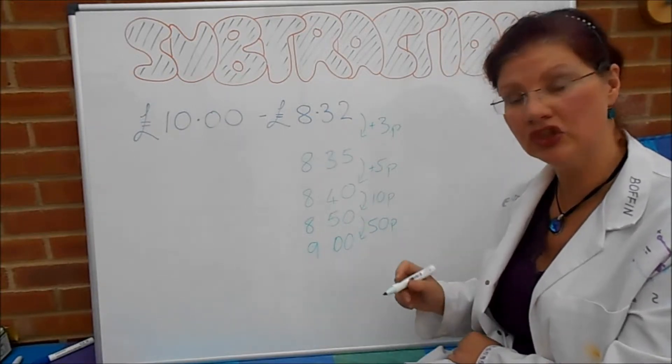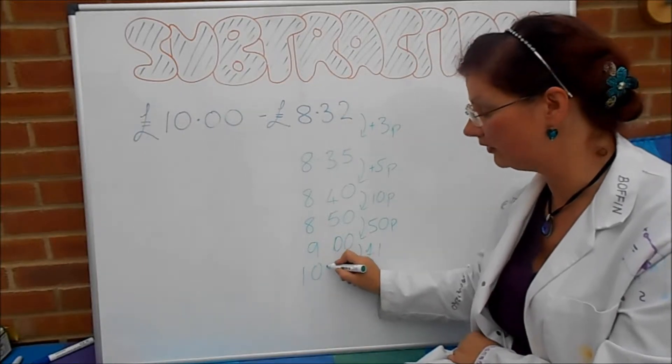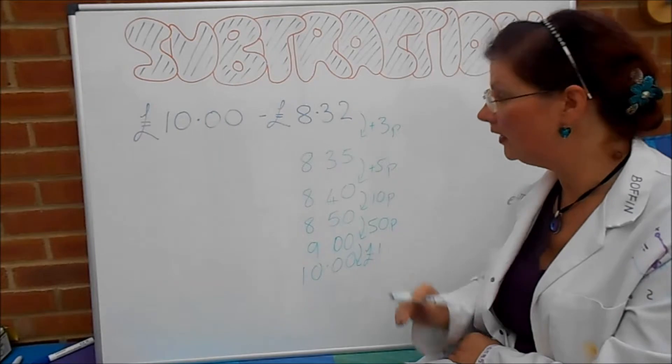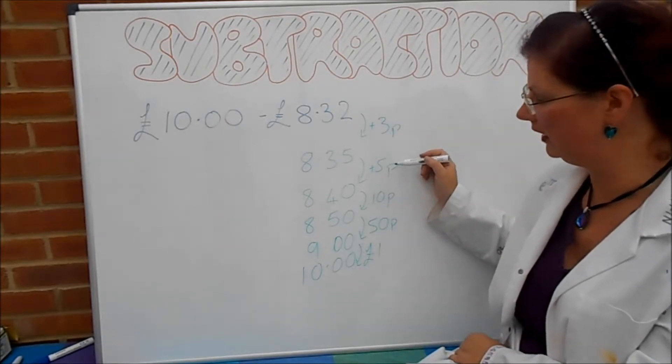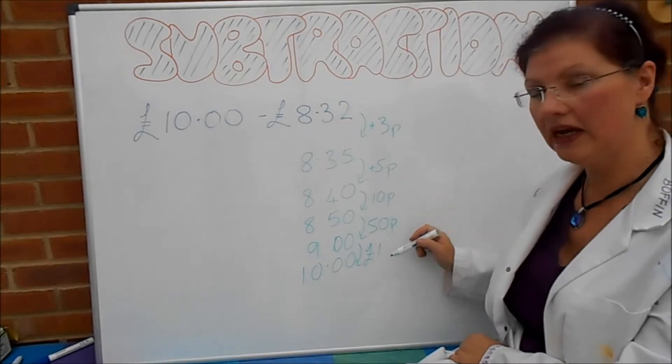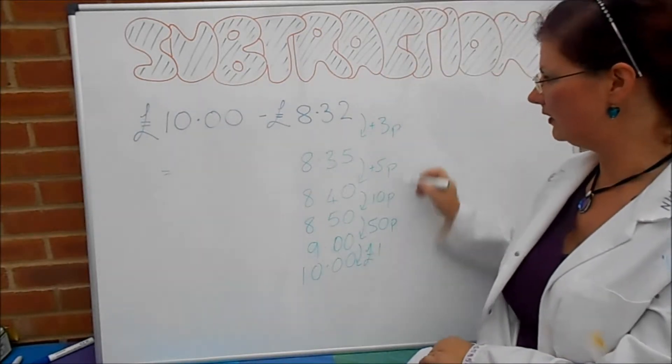And then finally we just need to add one more pound and that's got the £10 that the person paid with. So all in all the change that I've given is 3p plus 5p, 10p and 50p and £1. So that makes £1.68.